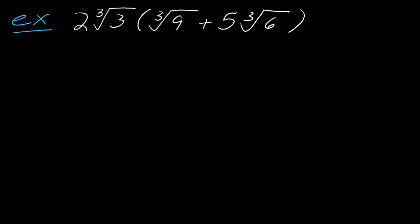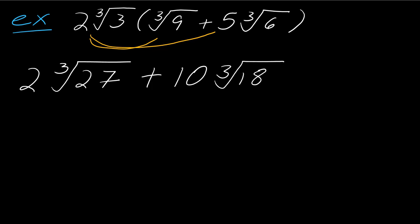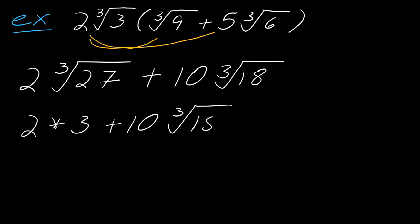This one actually has a little bit of a challenge because I have things outside the radical and inside the radical, so you have to keep the two worlds separate. When I am multiplying 2 times the cube root of 3 times the cube root of 9, it's just the stuff under the cube roots that gets multiplied together. So this becomes 2 times the cube root of 27. Then for the next part, I take 2 times 5 on the outside and the cube root of 18 on the inside. I can simplify the cube root of 27, so this becomes 2 times 3 plus 10 times the cube root of 18, which is 6 plus 10 times the cube root of 18.